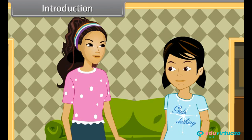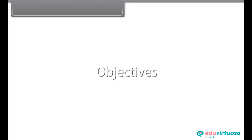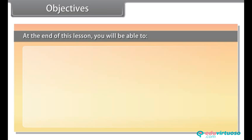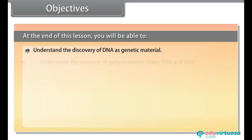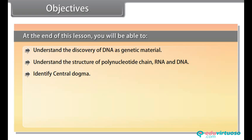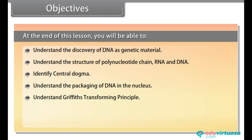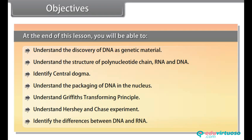Let me explain in detail. At the end of this lesson, you'll be able to understand the discovery of DNA as genetic material, understand the structure of a polynucleotide chain, RNA and DNA, identify central dogma, understand the packaging of DNA in the nucleus, understand Griffith's transforming principle, understand the Hershey and Chase experiment, and identify the differences between DNA and RNA.